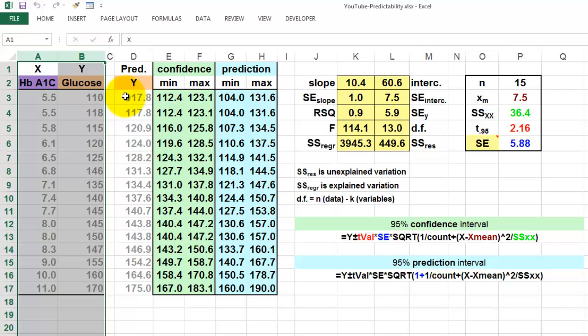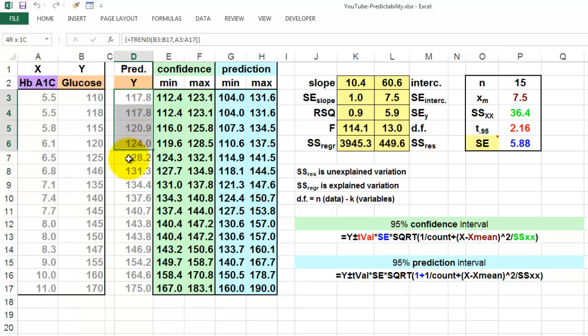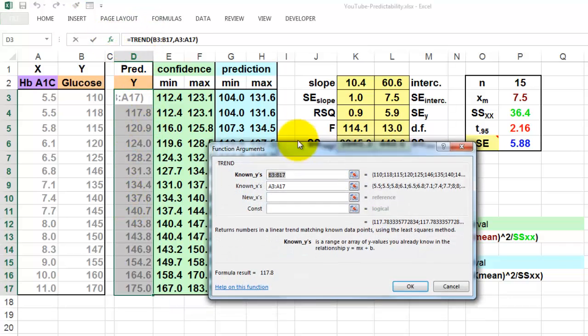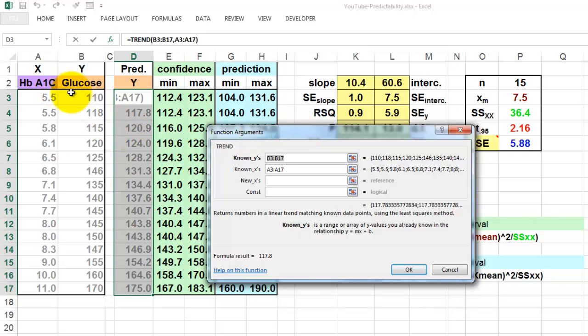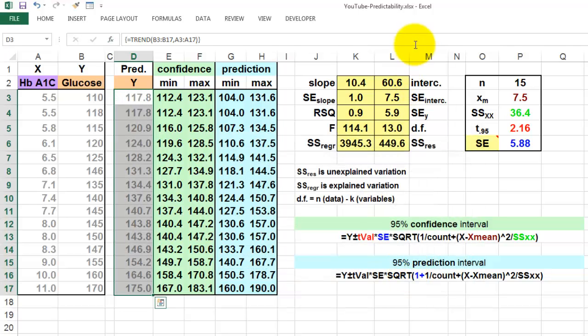The trend function in this case is a multi-cell array function. So you select multiple cells ahead of time and you call the trend function. The trend function says what are your y values, b3 through b7, your x values, a3 through a7. Don't click on OK because this is an array formula. So you do CTRL, SHIFT, OK, and you get these predicted values.